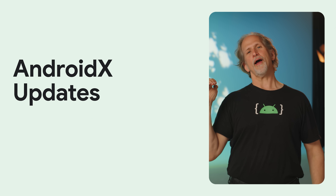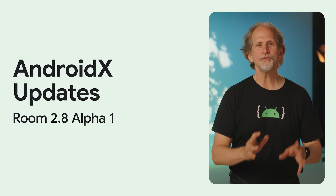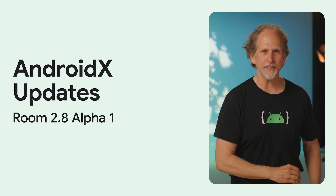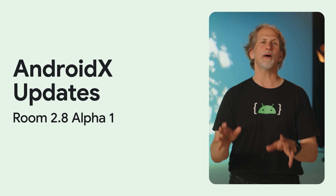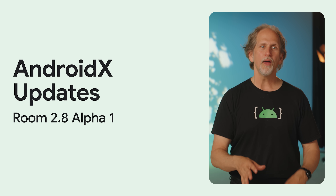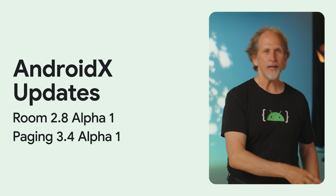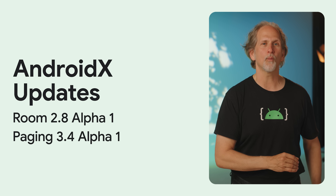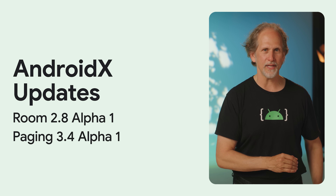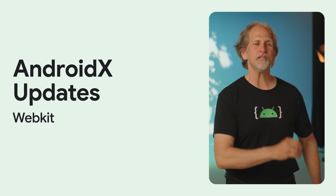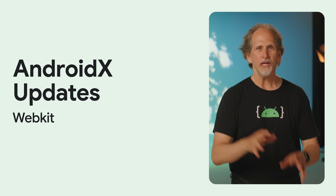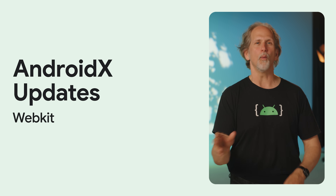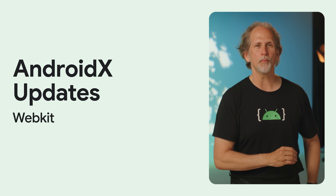Over in AndroidX, Room 2.8 Alpha 1 now allows you to get a support SQLite database wrapper to ease incremental migration to Room. Both Room 2.8 and Paging 3.4 Alpha 1 add KMP targets for watchOS and tvOS. WebKit gets HTTP header control, improved cookie handling, and an experimental API to warm up the WebView renderer process.